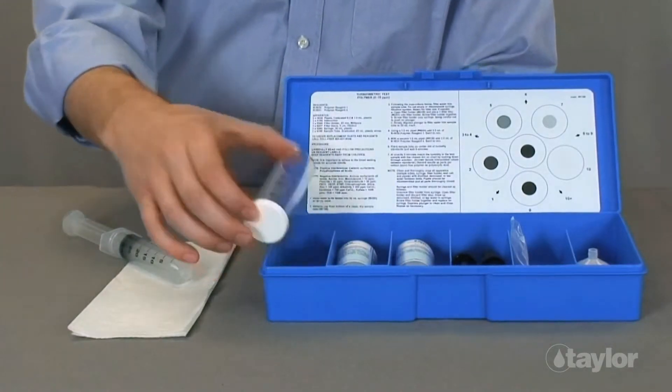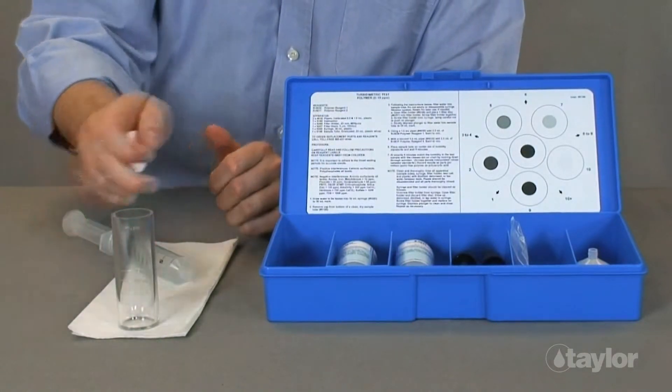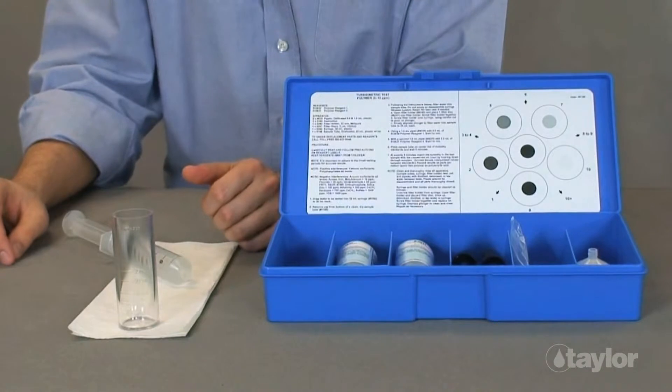First, remove the cap from the bottom of the 9198 sample tube. Make sure the sample tube is clean and dry. Set the sample tube aside momentarily.